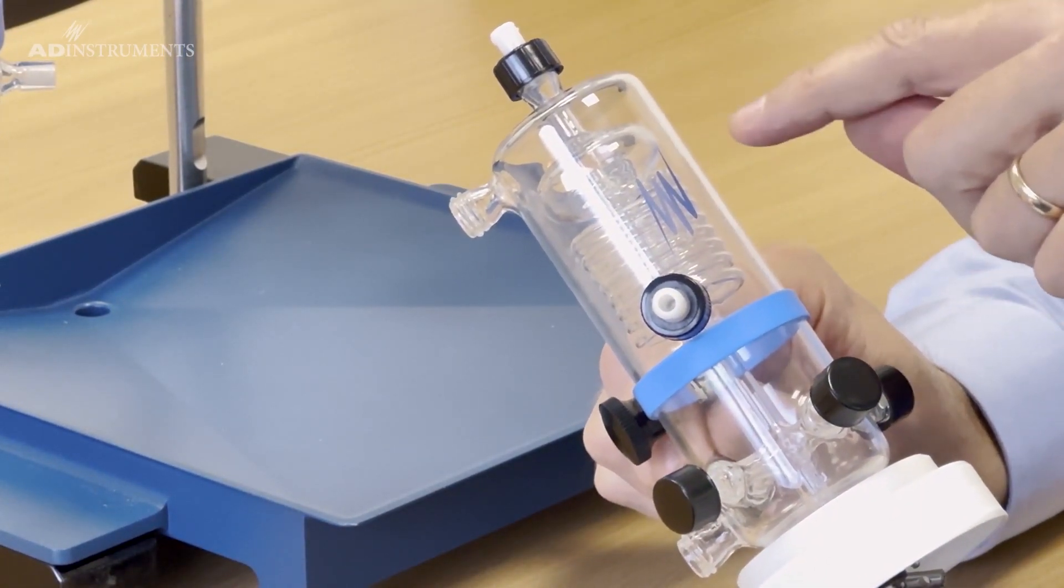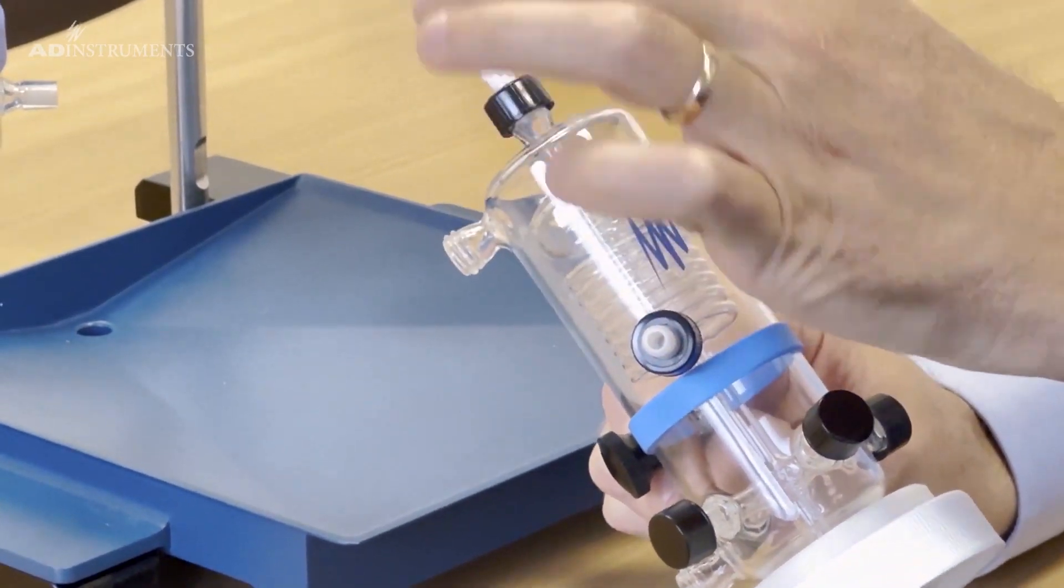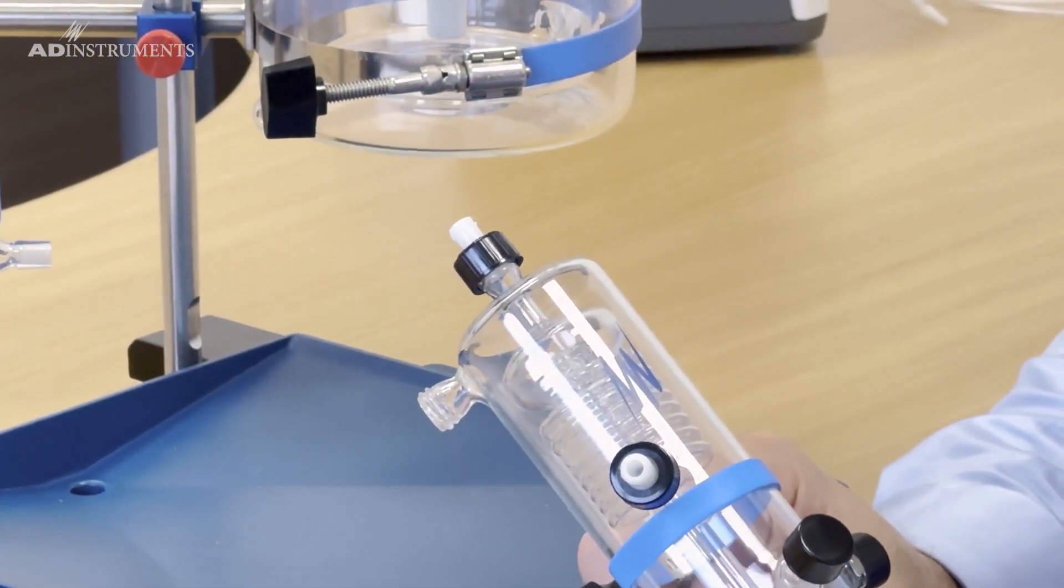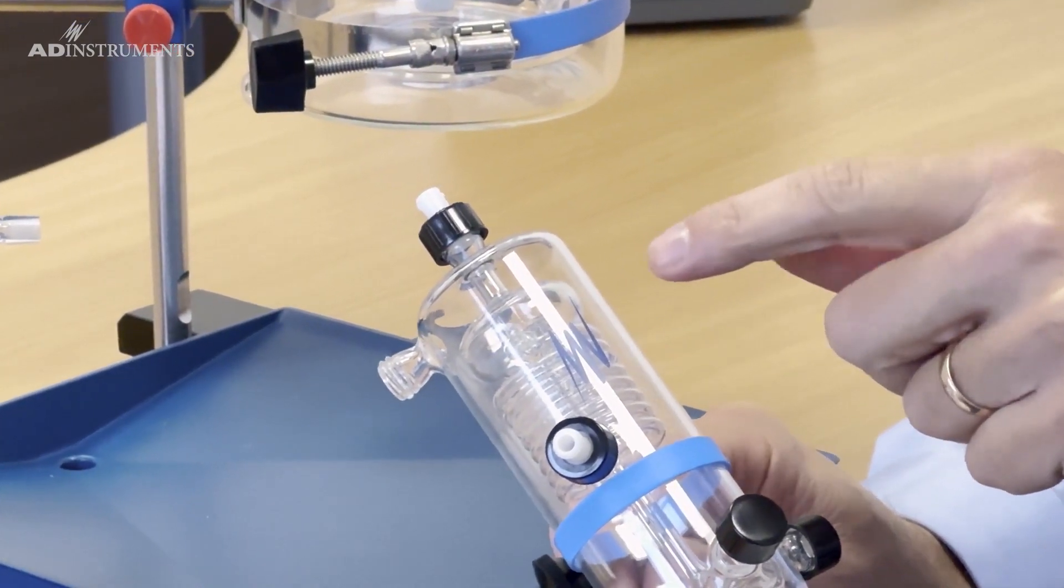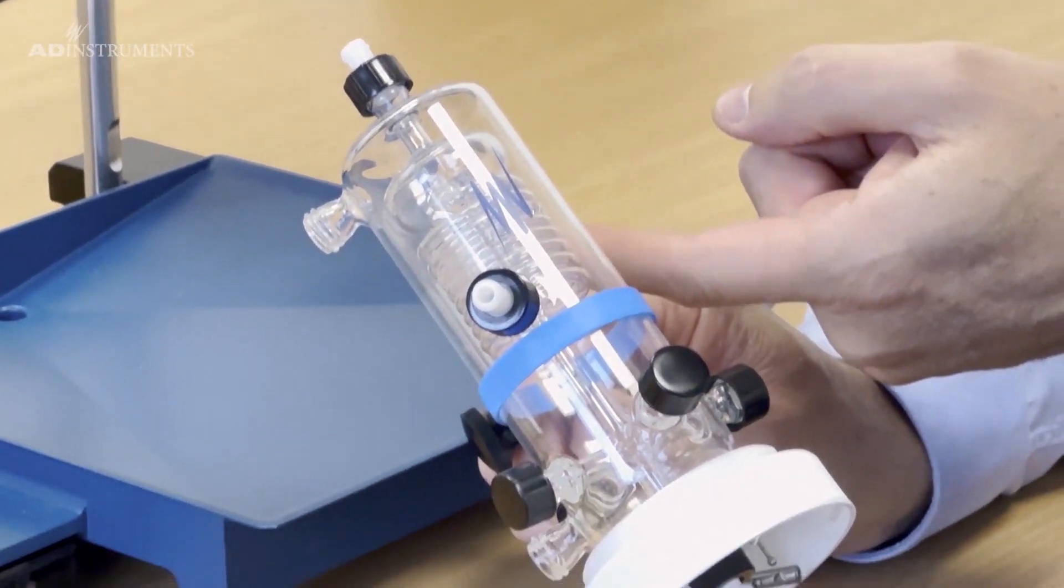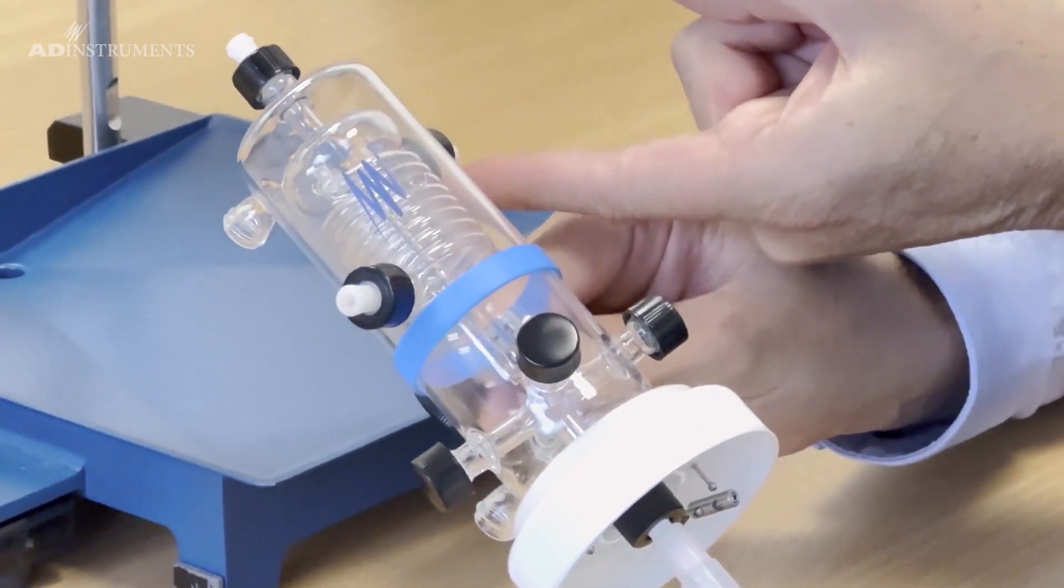On top of the bubble trap there is a port for a damping syringe to dampen any oscillations from the pump. The bubble trap also has an overflow port which is this one over here.